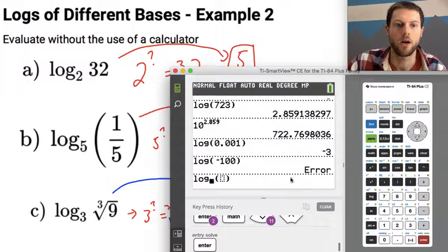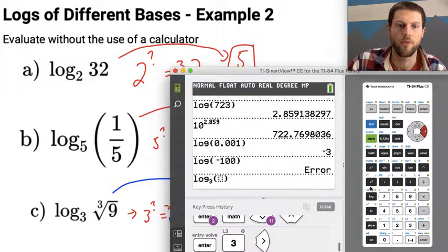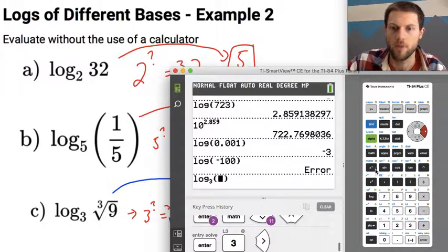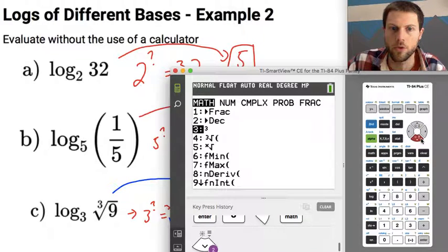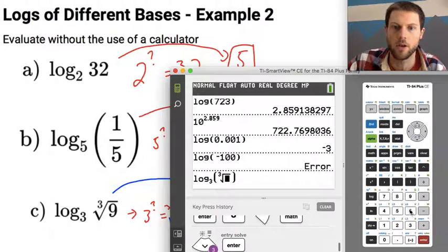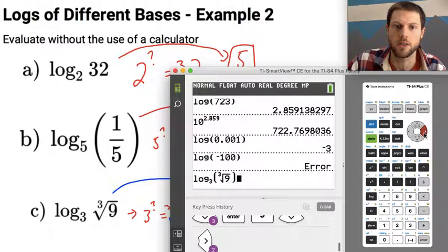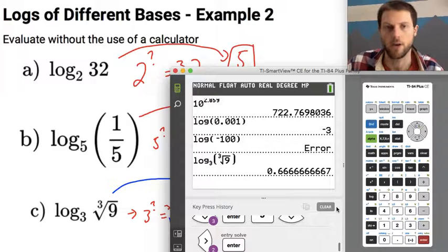And so I could type in my base, let's go to this last one since that's a weird one. Log base 3 of, and then I want the cube root of 9, so I can type in the cube root, I got a cube root button there too, cube root of 9, and I think I got that all typed in, so let's hit enter, and we should get 2 thirds, that's great.